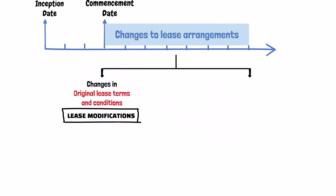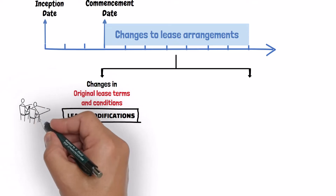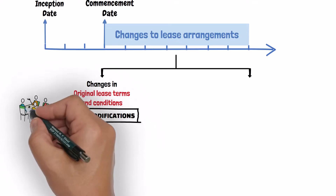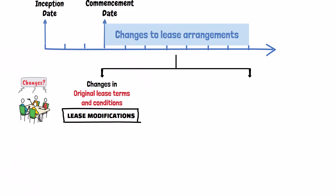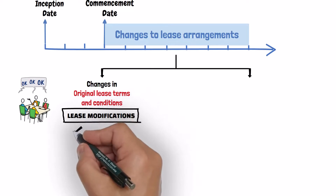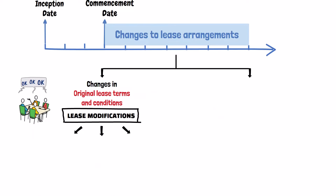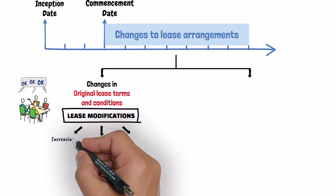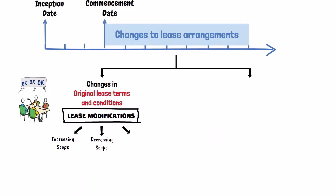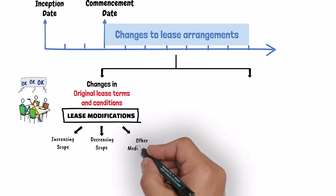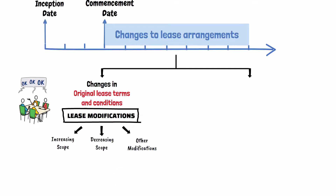A lease modification arises when both the lessee and the lessor renegotiate the original terms and conditions of the lease. This modification involves increasing or decreasing the scope of the lease, or any other modification that is neither an increase nor decrease in the scope of the lease, like for example, changing the consideration for the lease arrangement.